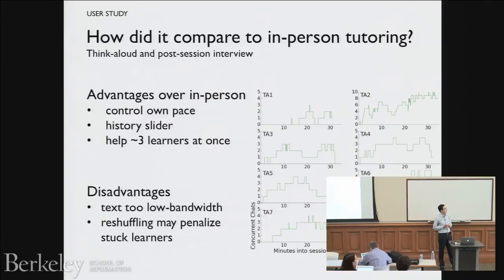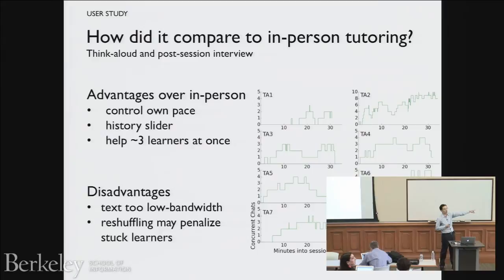Another audience comment: I'm wondering if the text issue is partly a result of the tutor not being fully clear, since the learner isn't necessarily aware that the tutor is also surveying two other people simultaneously. The response: yes, this is the tutor side — the tutor complained about wanting to have talked more with learners.